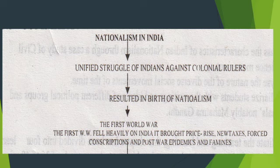The British rule was there and their policies were very exploitative toward the Indians. That's why people started to oppose — they may be Tamilians, Punjabis, or Bengalis; they all started to oppose the British government. We have seen in 1857 the first war of independence fought by Indians against the British. People were suffering commonly under British rule and this common suffering resulted in the birth of nationalism.